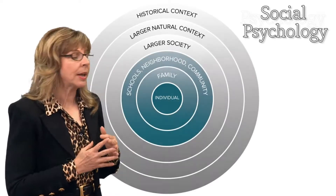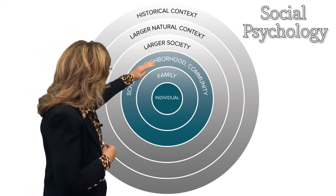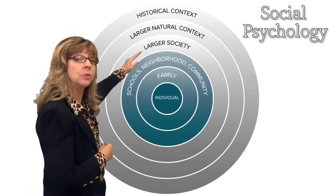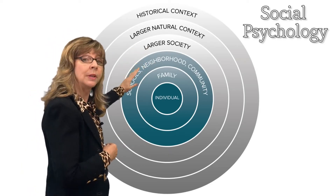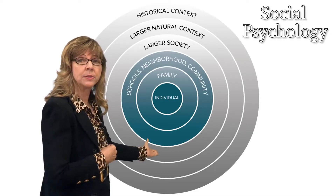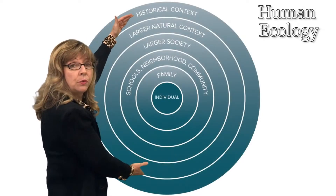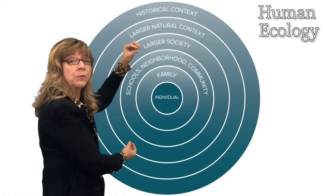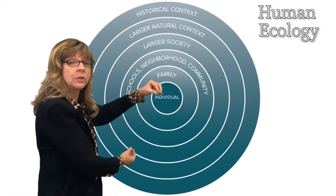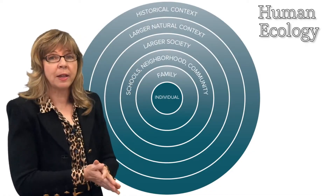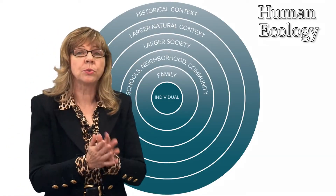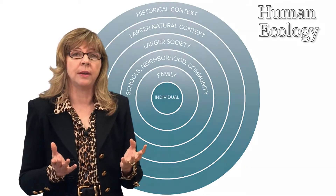Psychology, on the other hand, focuses on the innermost circle — the individual, their behavior, and their mental functions. Social psychology focuses on the interactions that individual has with the direct groups they interface with on an everyday basis. But only human ecology looks at the full context: the purposeful integration of the interactions among families, individuals, communities, and larger society. We're interested in all children and all adults in contemporary society.